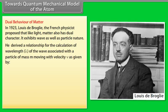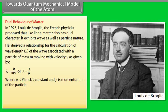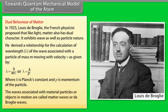De Broglie derived a relationship for the calculation of wavelength lambda of the wave associated with a particle of mass M moving with velocity V, given by: lambda equals H divided by MV, or lambda equals H divided by P, where H is Planck's constant and P is the momentum of the particle. The waves associated with material particles in motion are called matter waves or de Broglie waves.